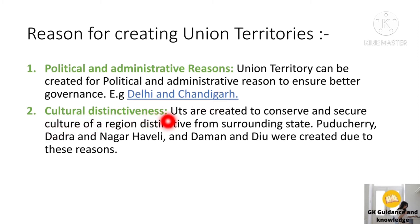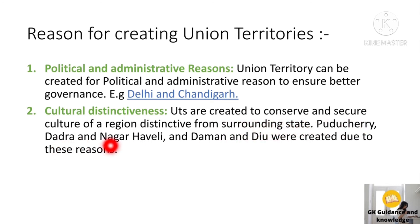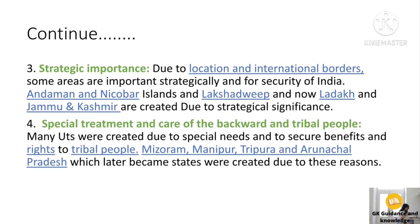The second reason is cultural distinctiveness. Union territories are created to conserve and secure the culture of a region distinct from surrounding states. For example, Puducherry, Dadra and Nagar Haveli, and Daman and Diu were created due to these reasons.